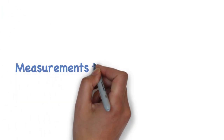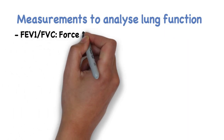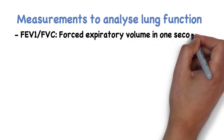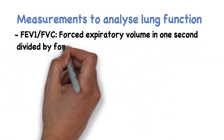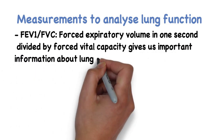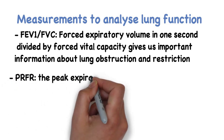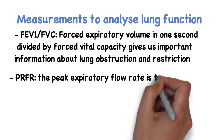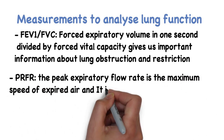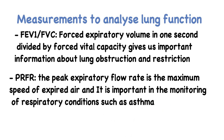There are also important lung ratios which are used as diagnostic criteria. For example, forced expiratory lung volume in one second divided by forced vital capacity gives us important information about lung obstruction and restriction. Another important measurement is the peak expiratory flow rate, which is the maximum speed that air can be expired, and it is important to monitor conditions such as asthma.